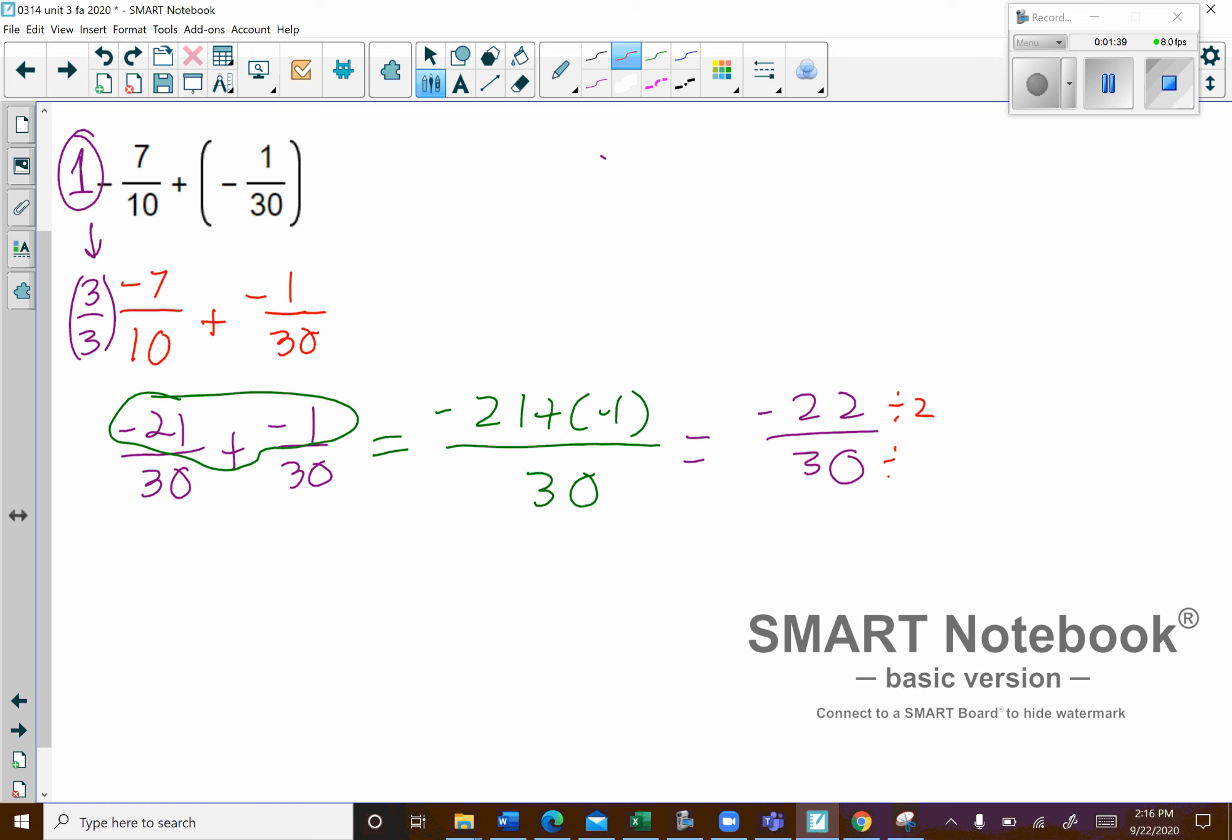I'm going to divide both top and bottom by 2, so that would give me negative 11 over 15. Then you check and see if they have any common factors between 11 and 15, and there's not, so that's going to be my final result right there. So I hope that helps.